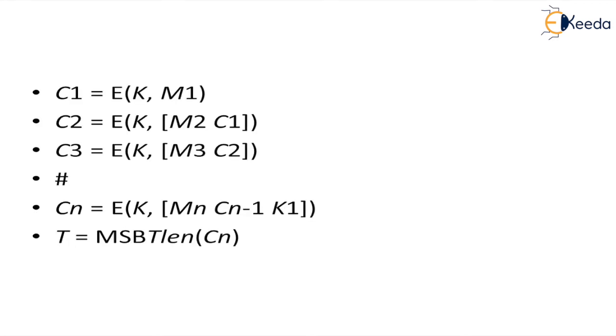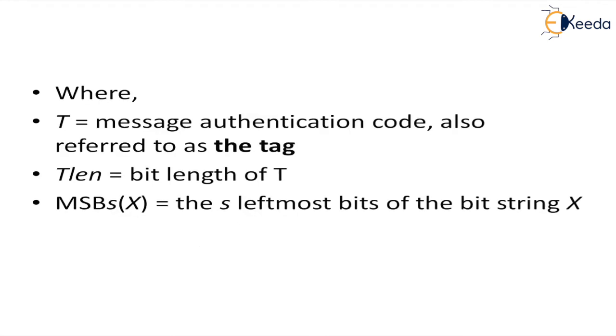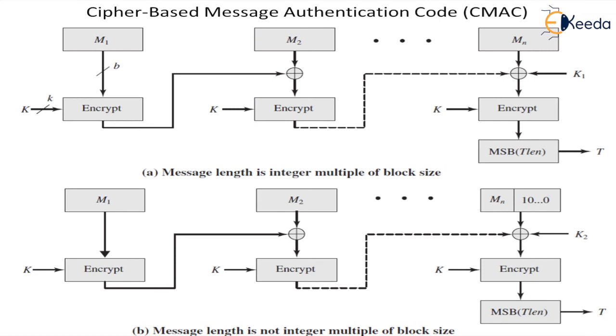CMAC is calculated as follows in terms of C1, C2, C3. C1 is E of K, M1. Then C2 is E of K, M2 XOR C1, likewise up to Cn equals E of K, Mn XOR Cn-1 XOR K1. And T is given as MSB Tln Cn, where T is message authentication code also referred to as tag. Tln is the bit length of T. MSB Sx is the leftmost s bits of the bit string x.